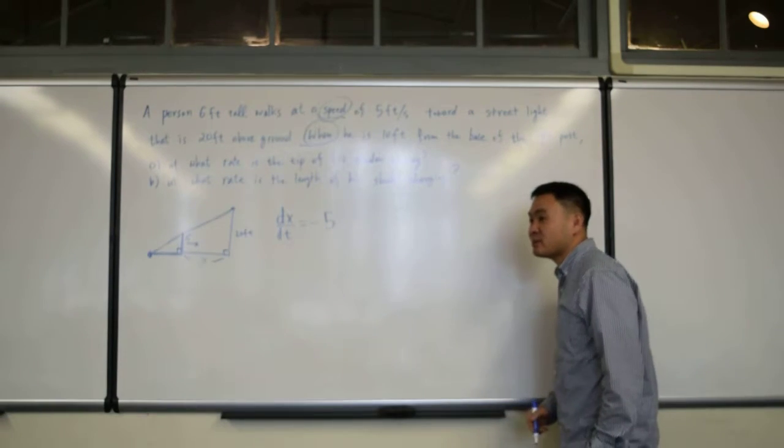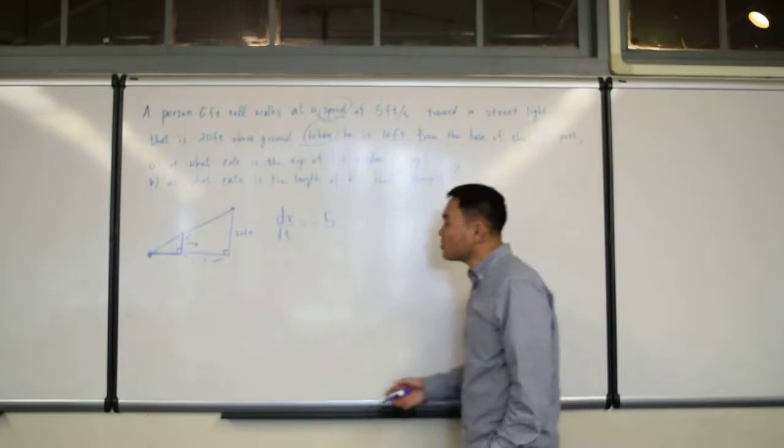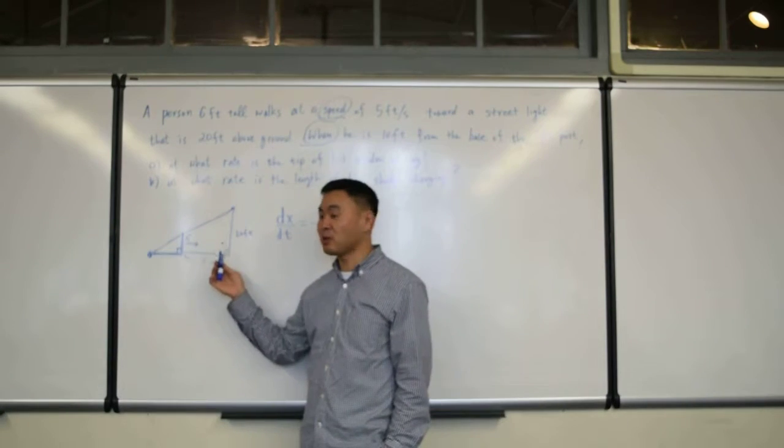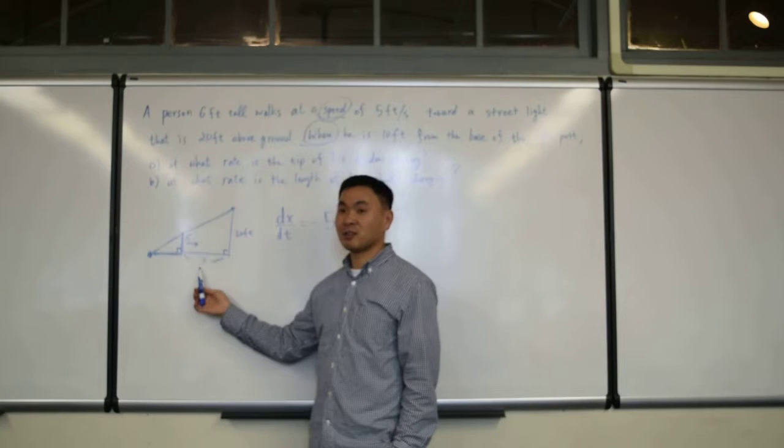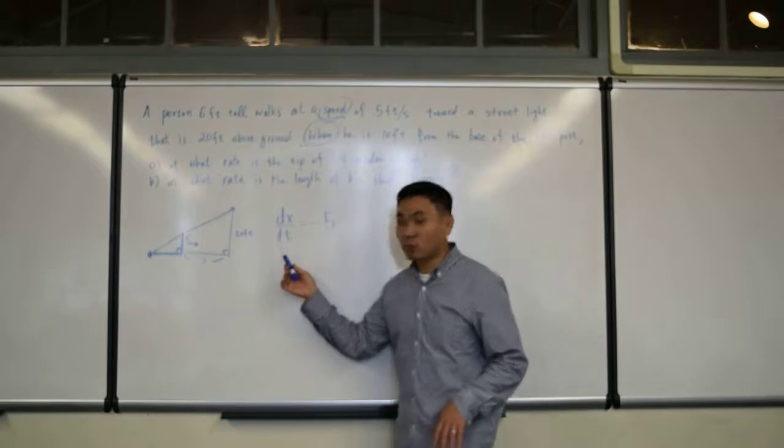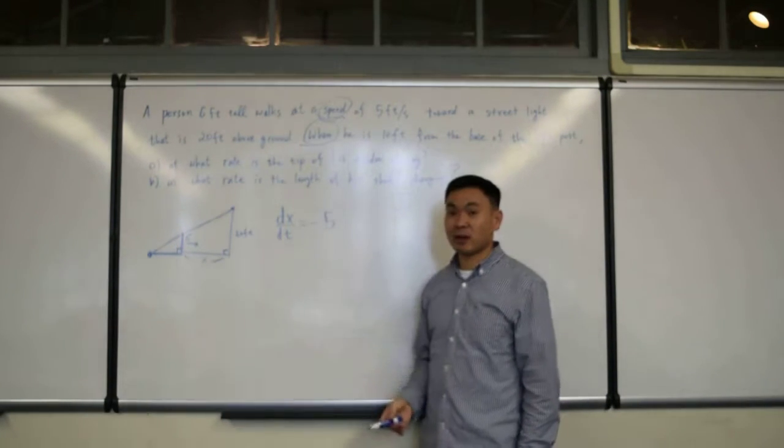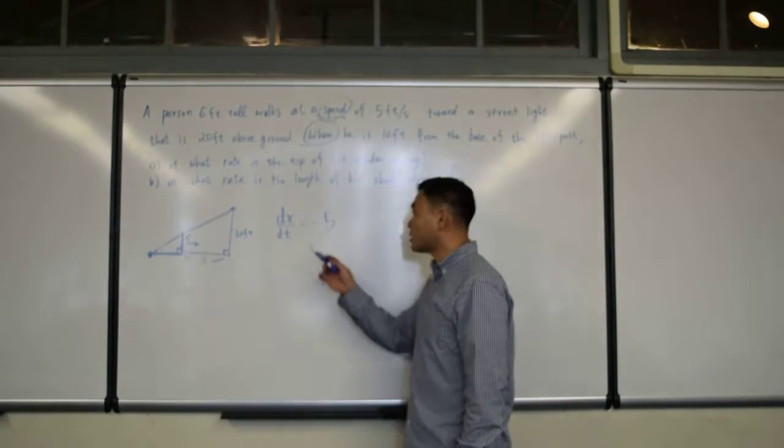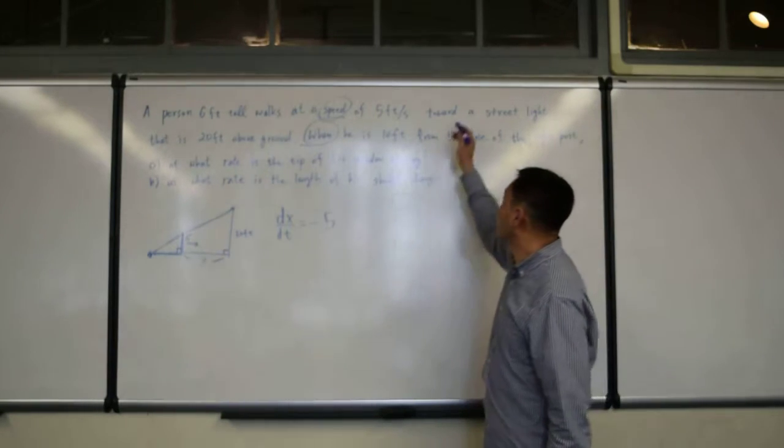Why negative 5? Because he's walking towards the street light and what would that result in? Is x shrinking or increasing? It's shrinking, it's decreasing. Therefore, the rate of change is negative 5. So that's how you should write down the first sentence.